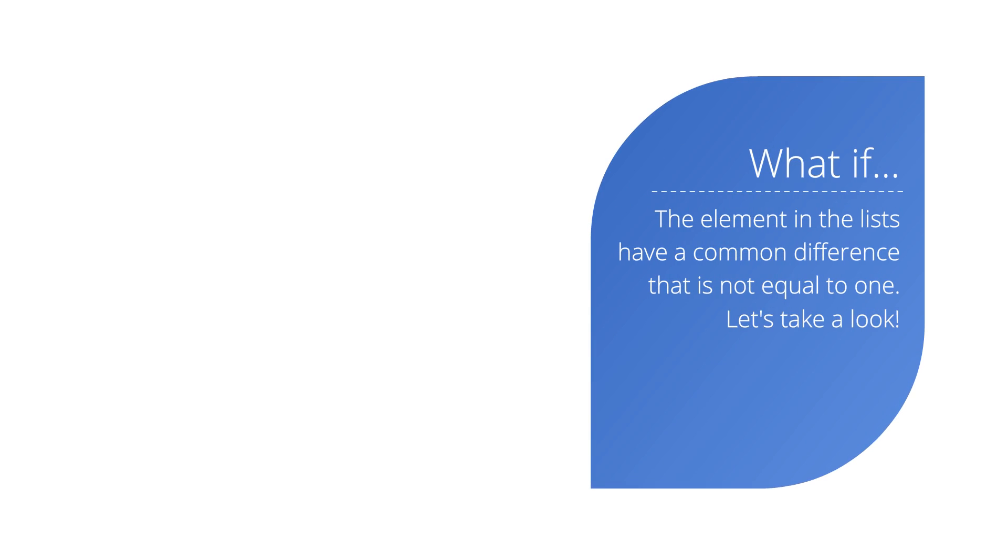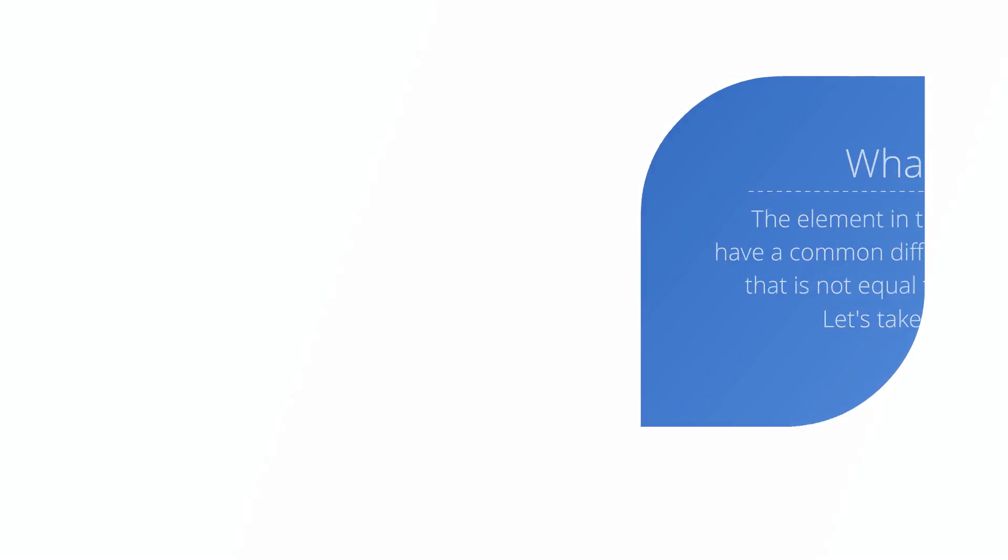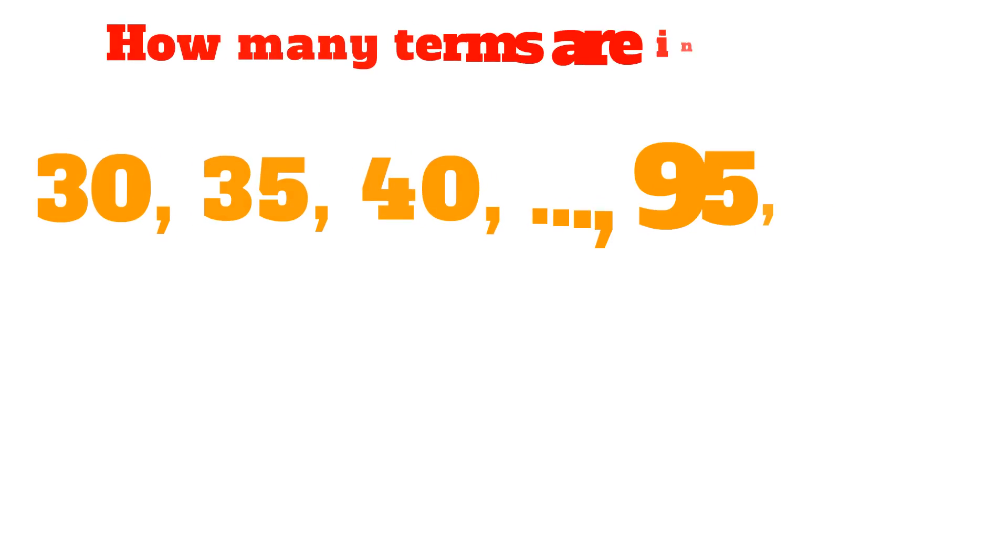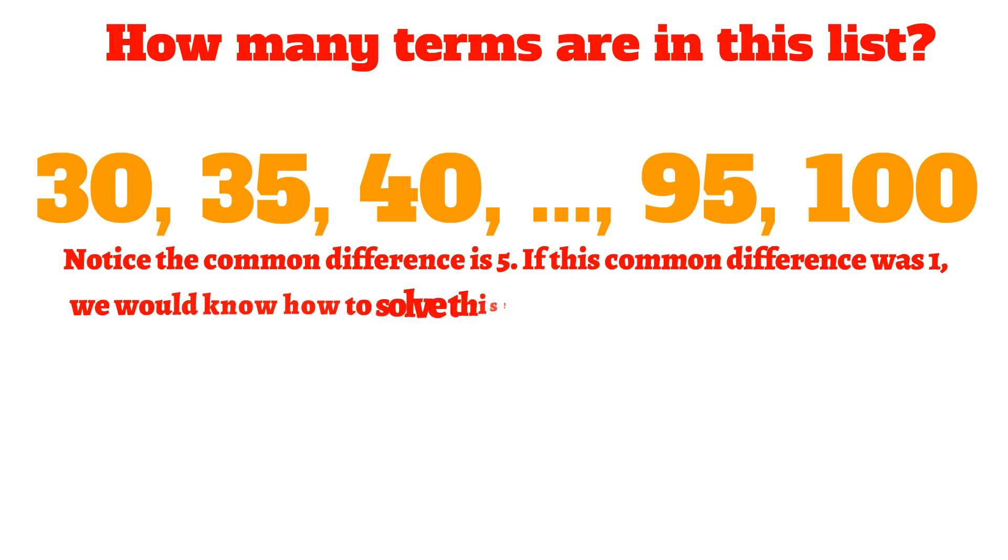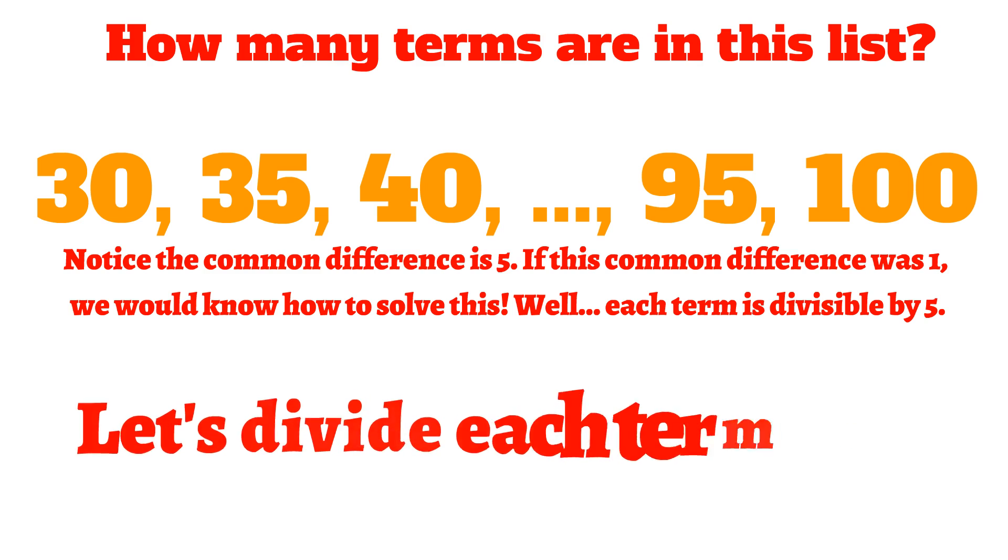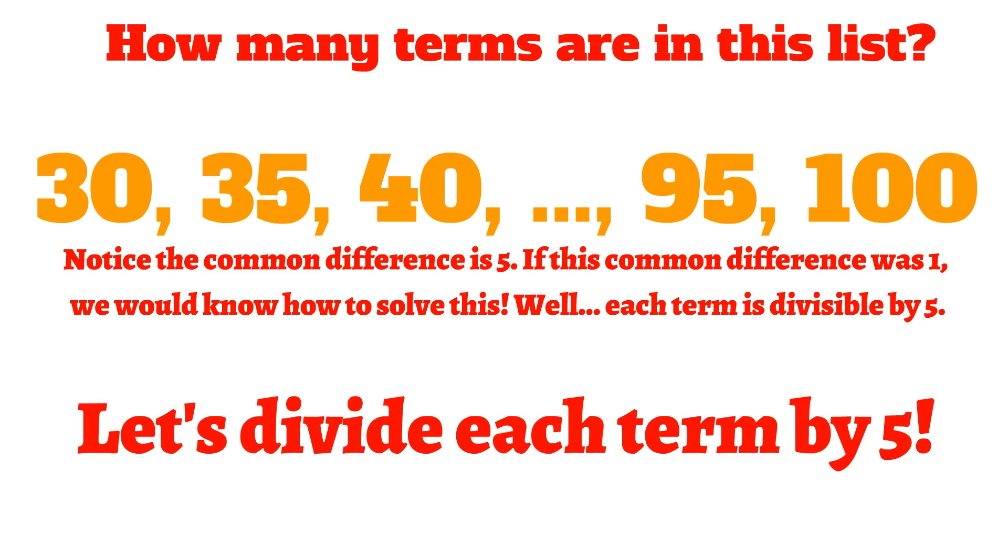What if the elements in the list have a common difference that's not equal to 1? Let's take a look at how to tackle these types of lists. How many terms are in this list? 30, 35, 40, all the way to 95, and 100. Notice the common difference is 5. If this common difference was 1, we would know exactly how to solve this. Well, each term is divisible by 5. Let's divide each term by 5.